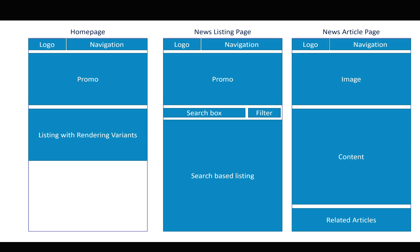In our training series we're going to create a home page which has a logo and navigation at the top, a promo, and then a list with rendering variants — a list where the user can switch the rendering variant. Then we're going to have a news listing page and the news article page.